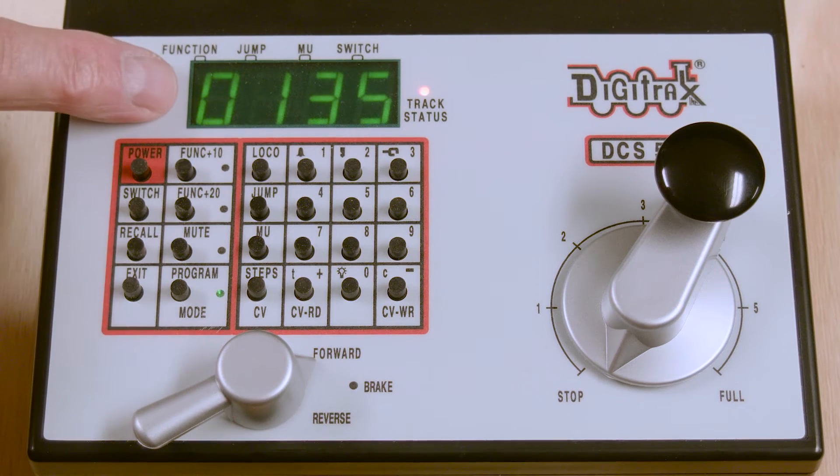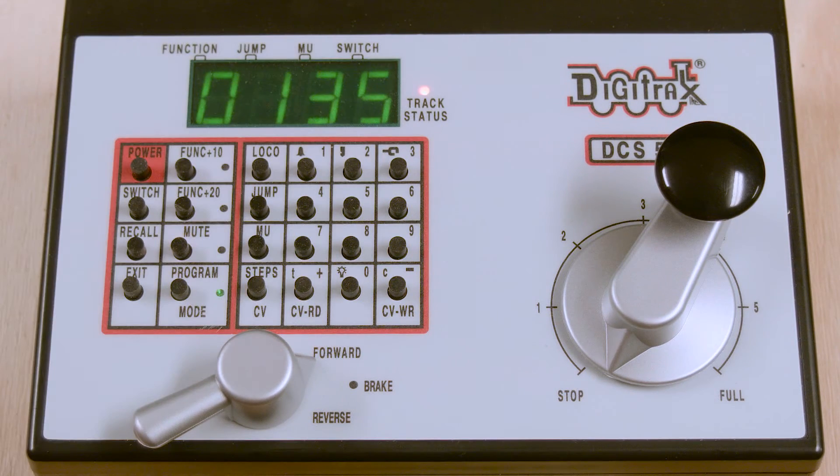Note that the display blinked and then the number 135 came up in the display. That indicates that as far as the Zephyr is concerned, this address has been programmed into this locomotive.